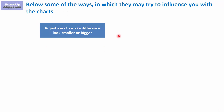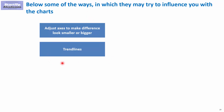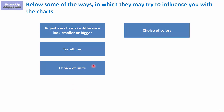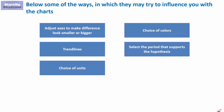First of all, you quite often will see people playing with the axes to make the difference in numbers look smaller or bigger. You will also be exposed to some trend lines being put on the data to suggest certain trends that actually do not exist. In many cases, by proper choice of units or colors, you can make certain things look bigger or smaller. Another way to influence the perception is simply to select the proper period of the data to support the hypothesis.